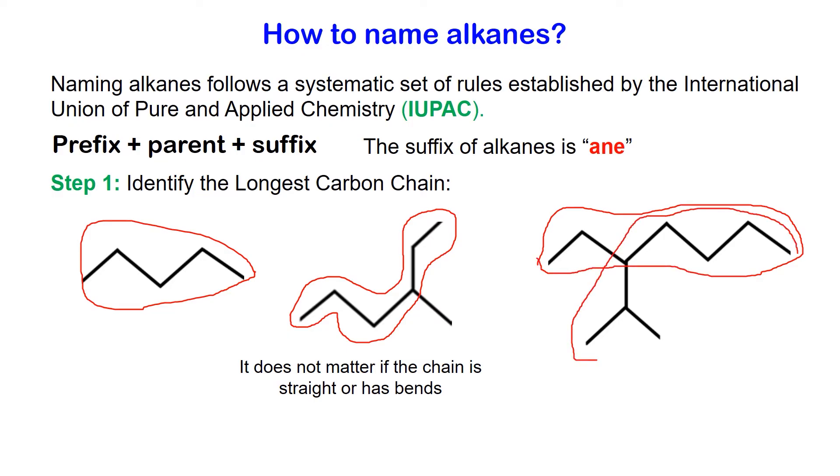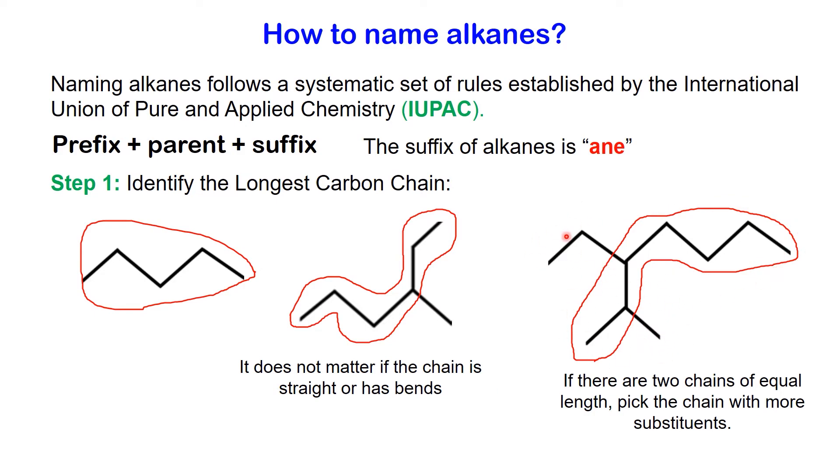According to the rule, when faced with two chains of equal length, the determining factor lies in the number of substituents. The guideline is simple: choose the chain with more substituents. In this molecule, the straight chain possesses one substituent while the second chain has two substituents attached to it. Following the rule, the second chain is the correct choice due to its higher count of substituents.